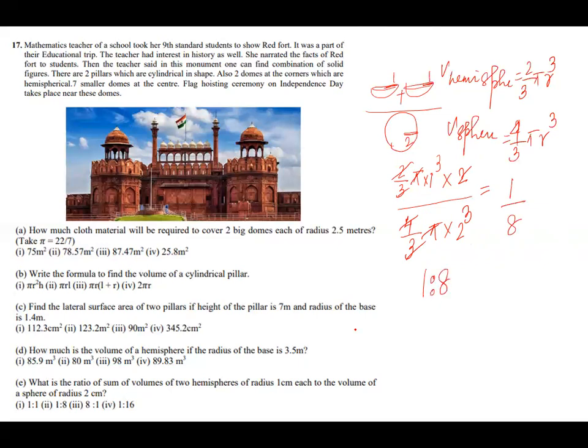So what is the ratio? 1 is to 8. So 1 is to 8. So option 2 is the answer. For part e, option 2 is the answer.